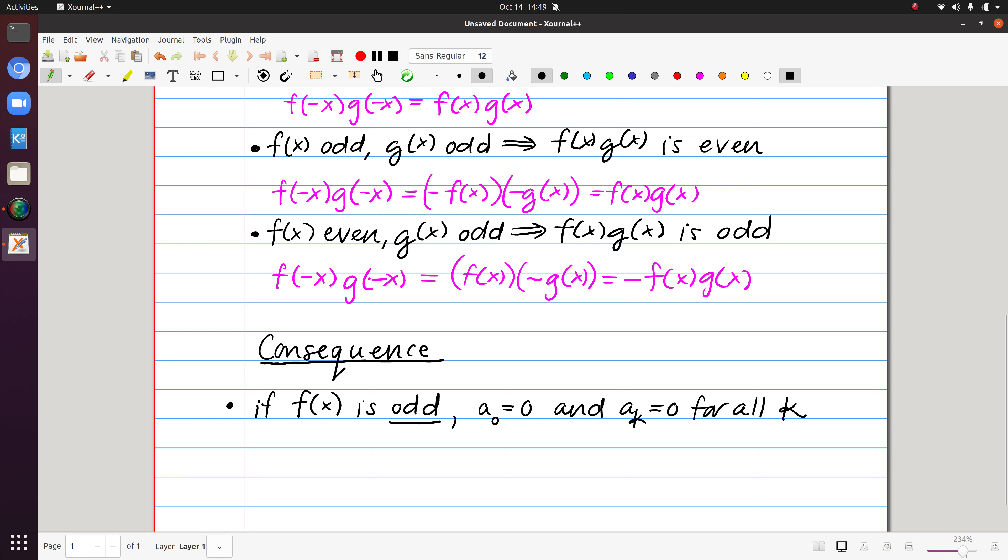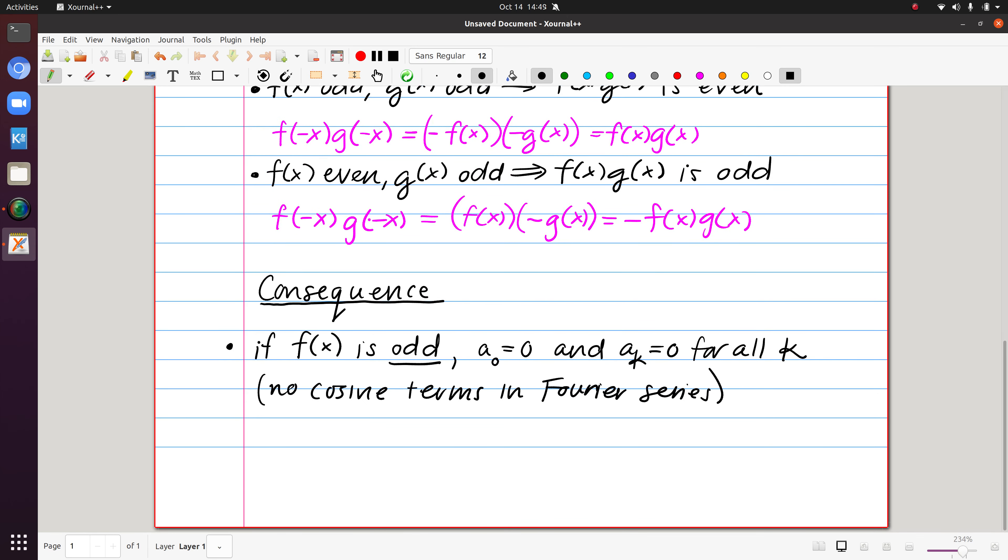Which this means that there are no cosine terms in the Fourier series. So one way to remember this here is an odd function we're approximating by a bunch of sine functions which are likewise odd.